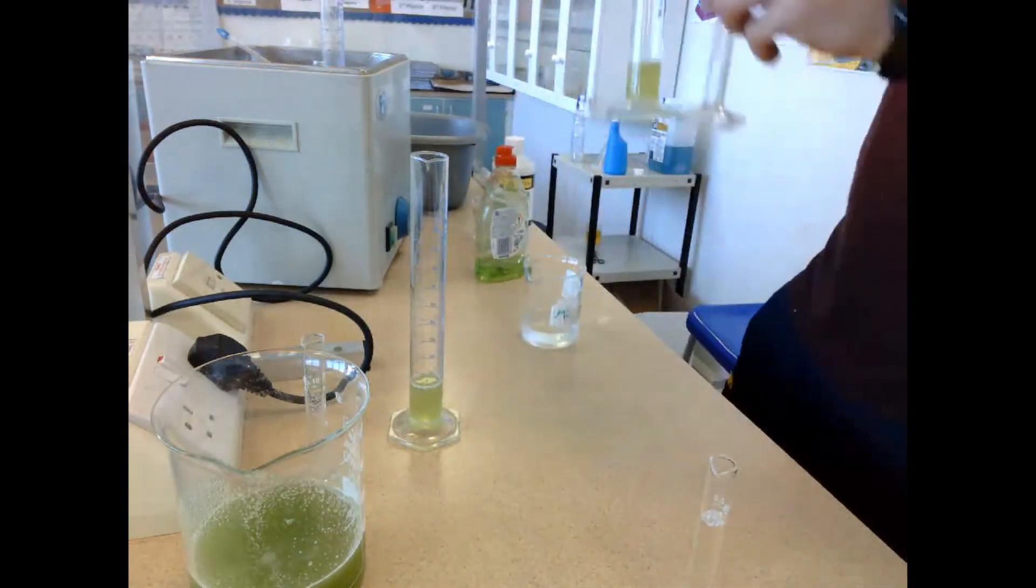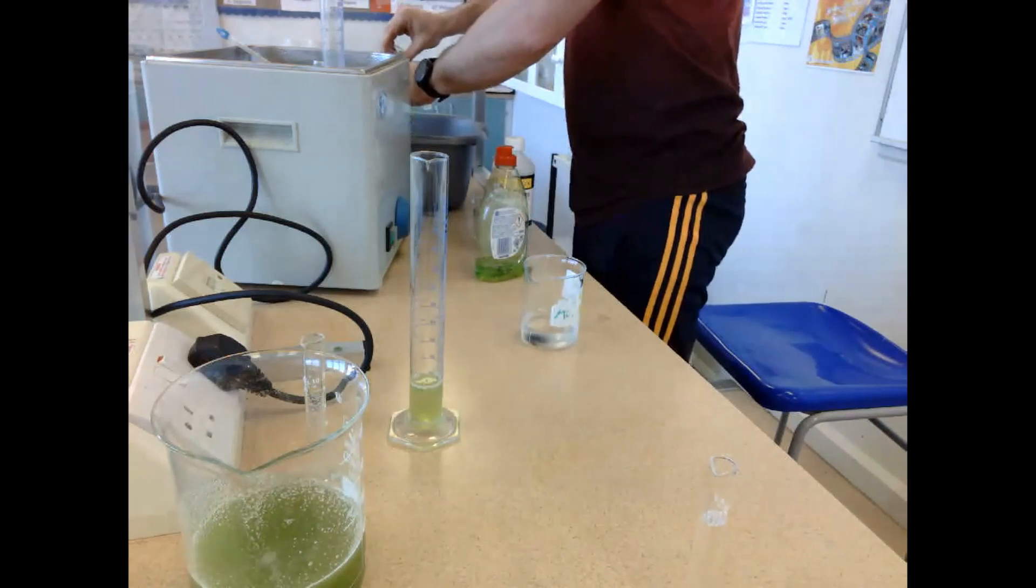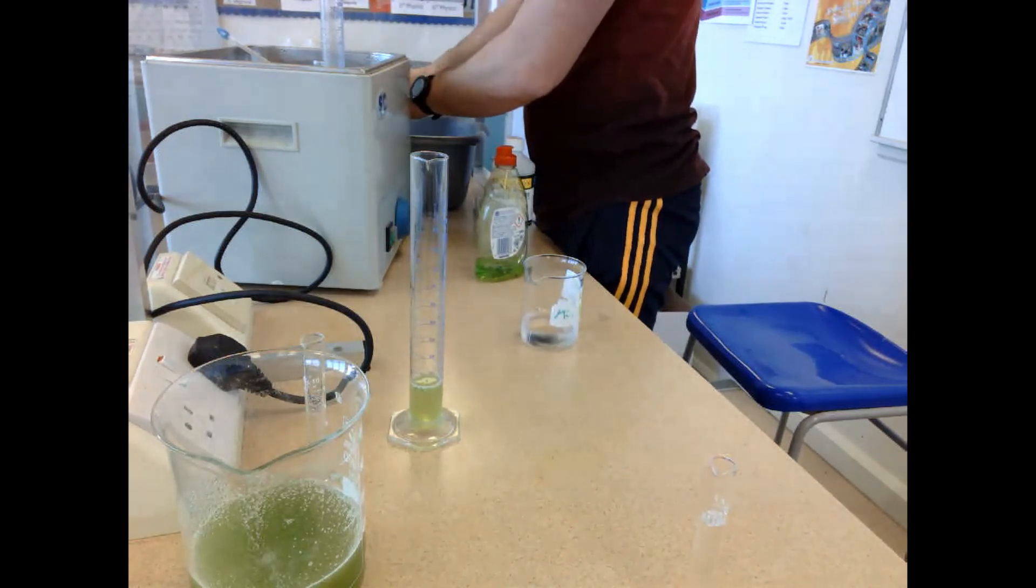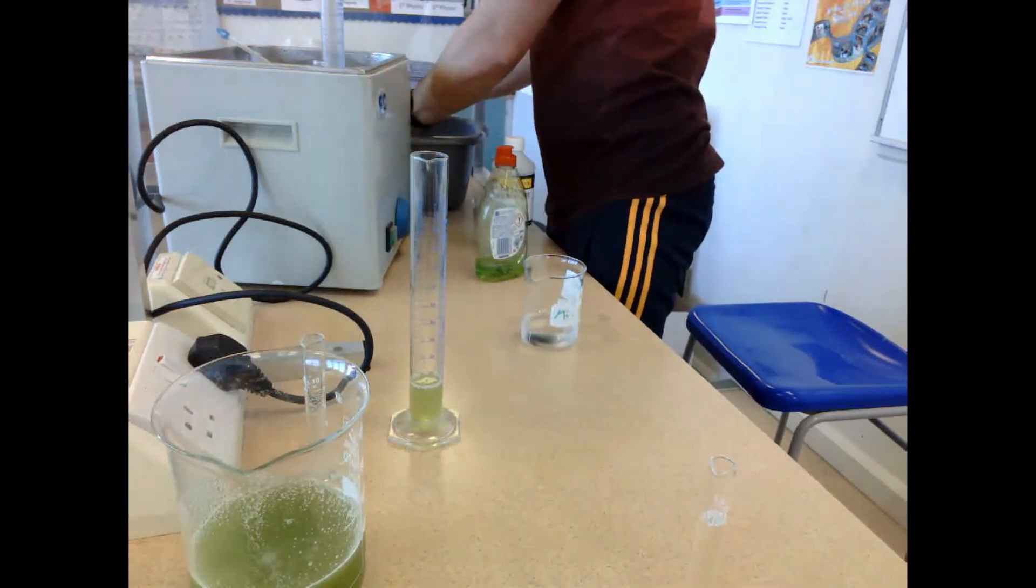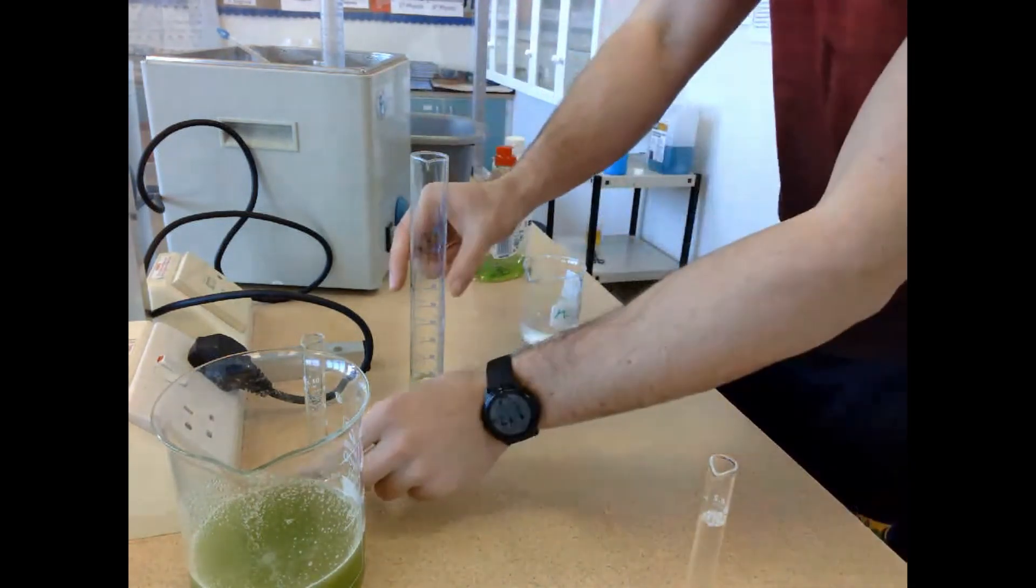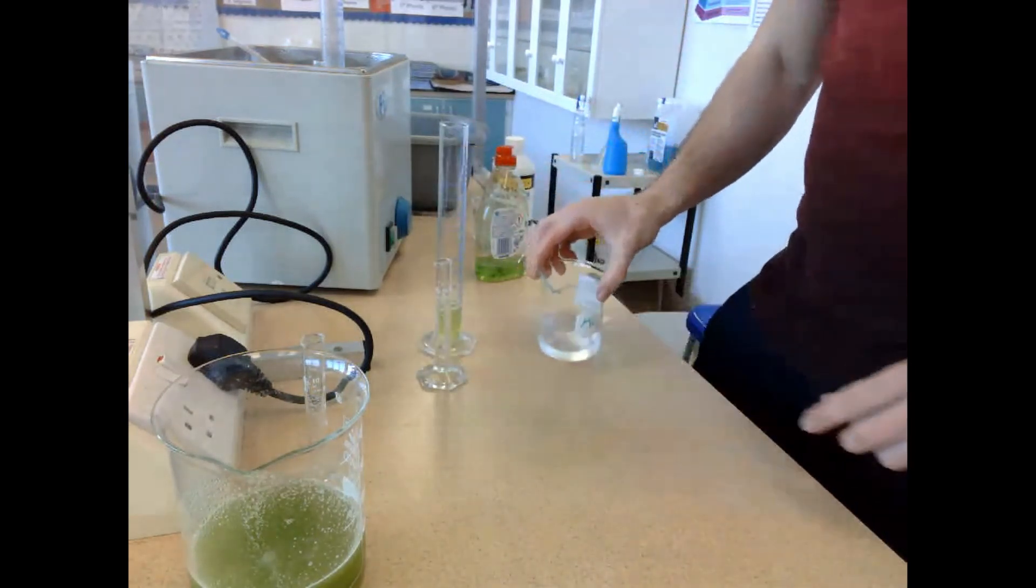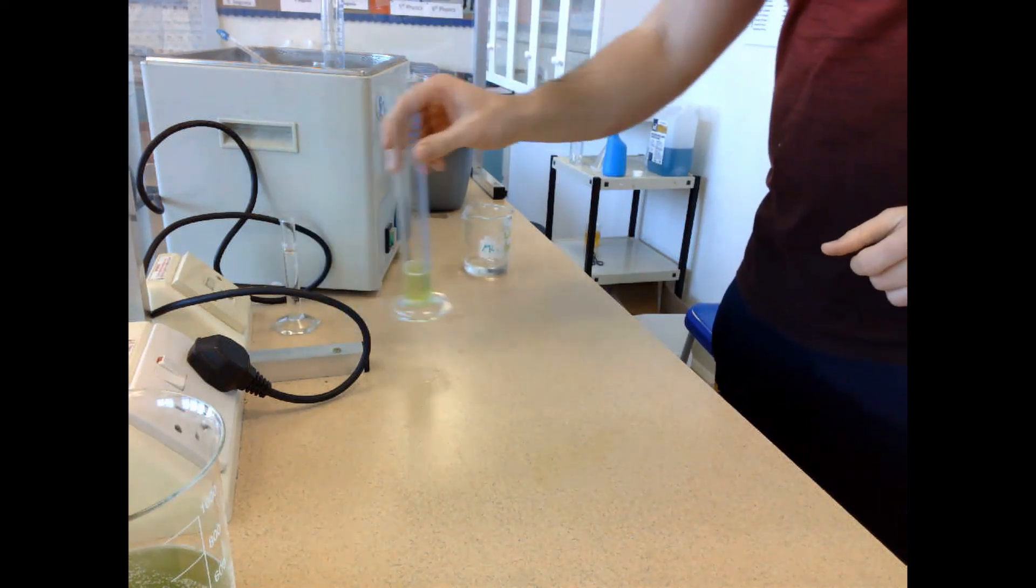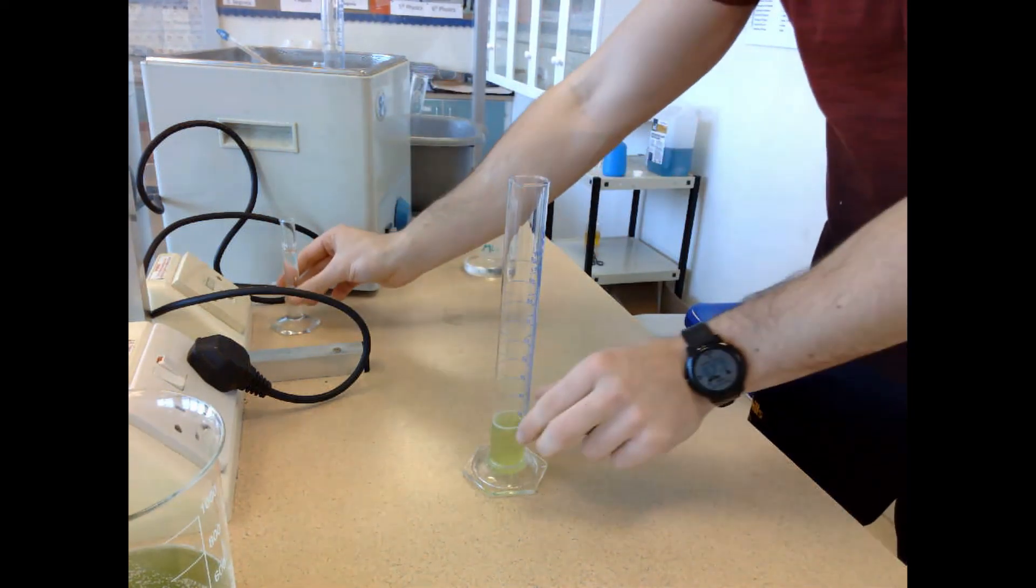Graduated cylinder one went into the water bath at 60 degrees. Cylinder two and its hydrogen peroxide went into the ice bath, where I adjusted the ice to prevent tipping and lower the temperature. Cylinder three was left at room temperature, which was about 20-21 degrees.